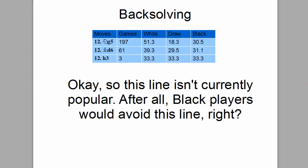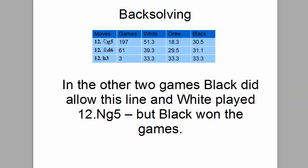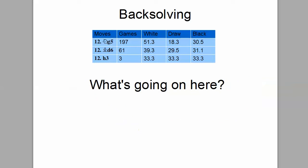Black players would avoid this line, right? Well, then you check out those four games from three years ago. In two of those four games, white played Bishop D6. And in the other two games, black did allow this line, and white played Knight G5. But black won those games.